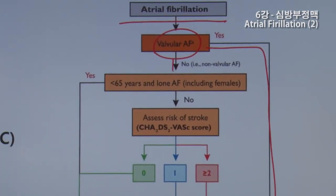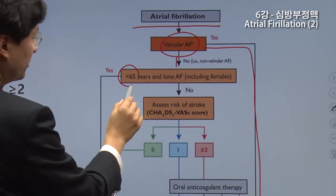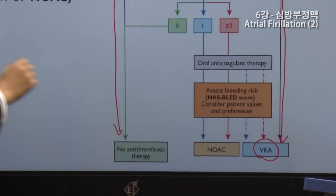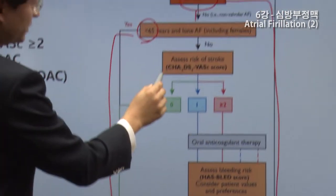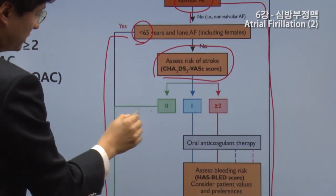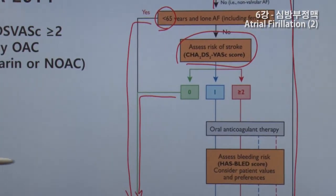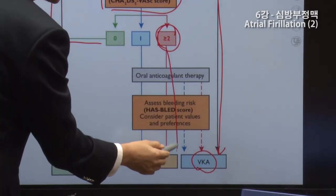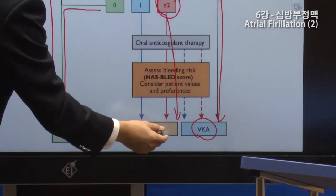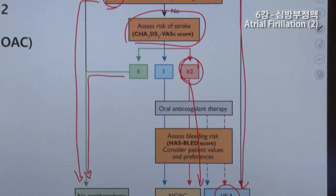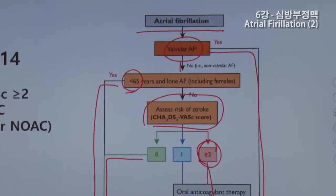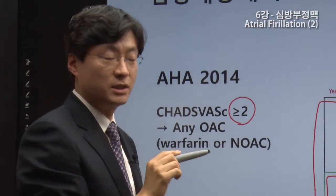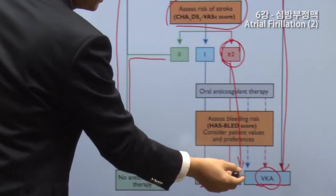After that, if it is non-valvular atrial fibrillation, and the patient is 65 years old with a CHA₂DS₂-VASc score of zero, anticoagulation is not used. If the CHA₂DS₂-VASc score is 2 or more, anticoagulation is indicated — either a NOAC or Vitamin K antagonist. This follows both the European and American guidelines, where a score of 2.0 warrants anticoagulation.